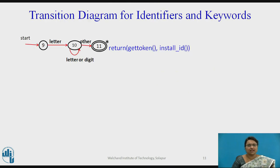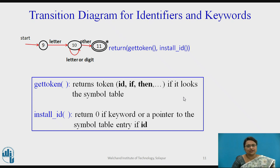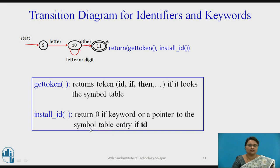Another transition diagram is used for identifiers and keywords. It reads everything starting with a letter followed by letter or digit combinations. It returns two things: the functions get_token and install_id. get_token returns the token — if it's a keyword it returns the keyword itself (if, then, while, etc.); if it's an identifier it returns ID. install_id returns a pointer to the symbol table entry for the identifier, creating an entry if one doesn't exist. If the token is a keyword, install_id returns zero (null).